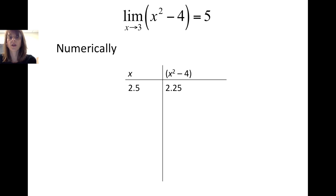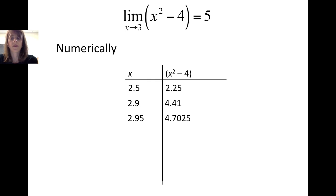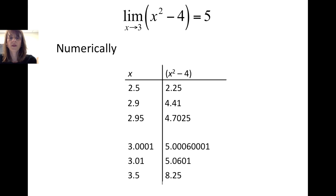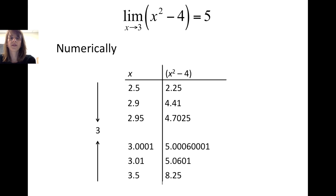We can look at this limit numerically using a table of values where the x values are close to 3. For x equals 2.5, we get 2.5 squared minus 4, which is 2.25. As we choose values closer to 3, such as 2.9 or 2.95, we get 4.41 and 4.7025 respectively. On the other side of 3, if x equals 3.5 the output is 8.25; if x equals 3.01 the output is 5.0601; and for x equals 3.0001, we get 5.00060001. So as x approaches 3 from either side, the output of x squared minus 4 gets close to 5.